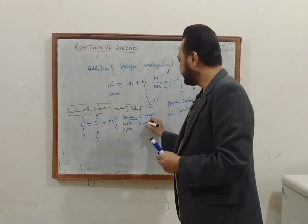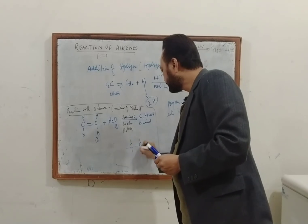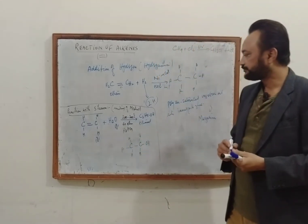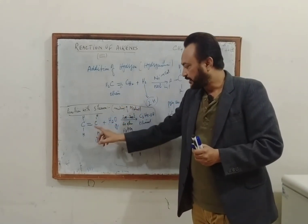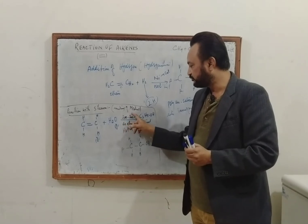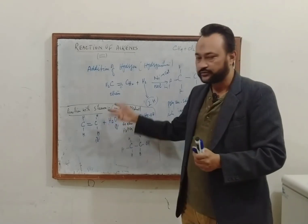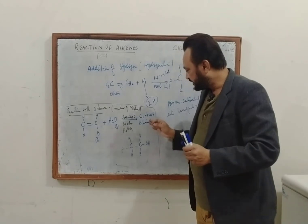Ethene reacts with steam at 200 to 300°C, 60 atm pressure, and phosphoric acid (H₃PO₄) is used as a catalyst. The product is ethanol (C₂H₅OH) — alcohol is formed. Similarly, propene gives propanol, butene gives butanol, and so on. The standard name is ethanol, also called ethyl alcohol.